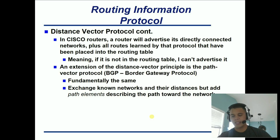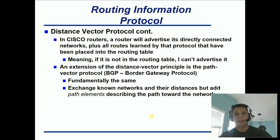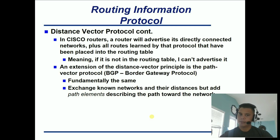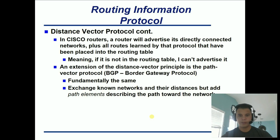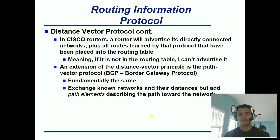The only exception is link state routing protocols — regardless of whether it's in the routing table or not, they will advertise everything they know. Distance vector protocols — EIGRP and RIP version 2 — it has to be in the routing table, whether it's connected networks or RIP learned networks.